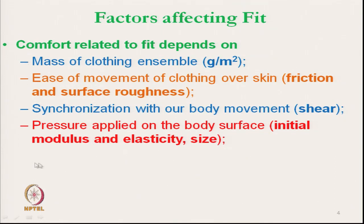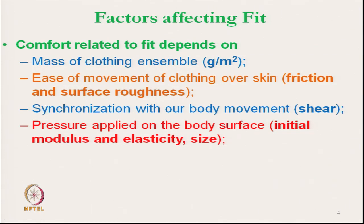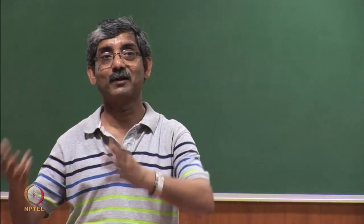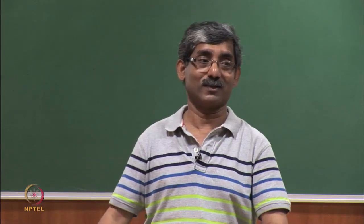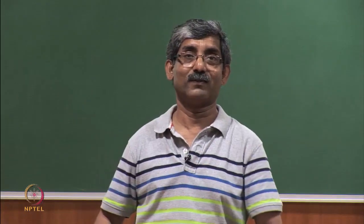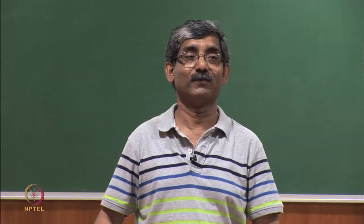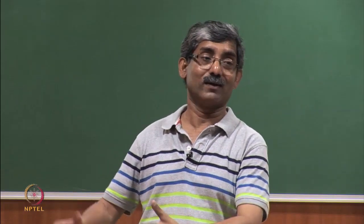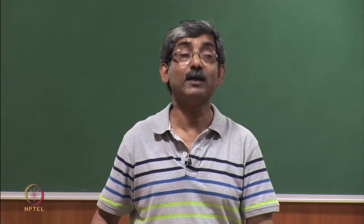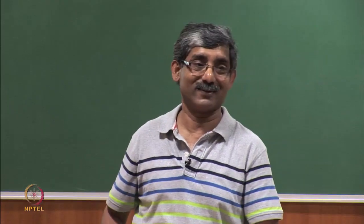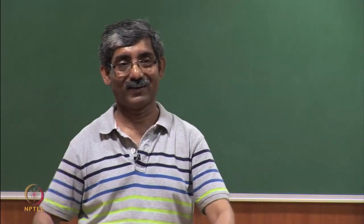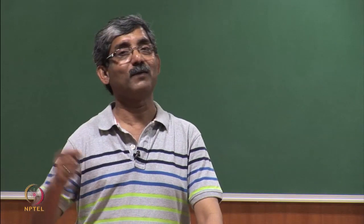These parameters - like mass of the clothing - are not always in our control when we talk about fit. We cannot always expect the fabric will be of proper friction and surface roughness. Sometimes, if we want a fabric with higher thermal insulation, our requirement is for a very thick fabric, so mass per unit area will be high. Sometimes roughness is required, and sometimes we may require a very stiff fabric, like a coated fabric required for protective clothing.